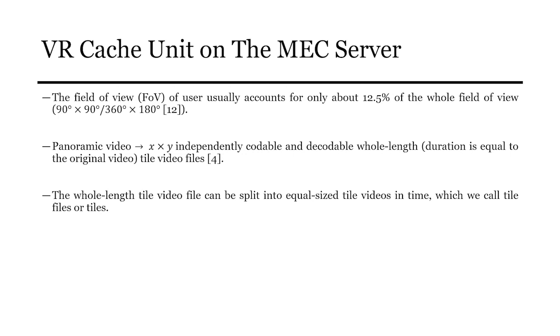Because the user's gaze shifts while watching the video, the requested rate of the whole tile video fluctuates within time and may be low at a certain time. If the whole tile video field is a minimal cache unit, the MEC server's cache efficiency is low. So it can be split into equal sized tile video in time which we call tile fields or tiles.